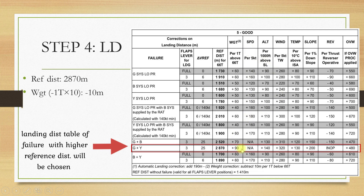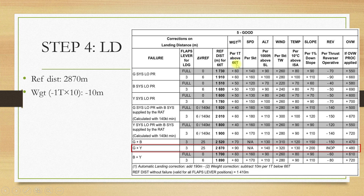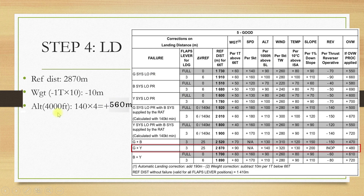The first correction is the weight correction. The table is for 66 tonnes; since we are 1 tonne below 66 tonnes we go to the bottom of the table which says subtract 10 metres per 1 tonne below 66 tonnes, so we subtract 10 metres. The next correction is the speed correction, which is not applicable for us. Then we have the altitude correction: per 1000 feet above sea level add 140 metres. We are at 4000 feet, so we multiply 140 by 4 and get 560 metres as the altitude correction.